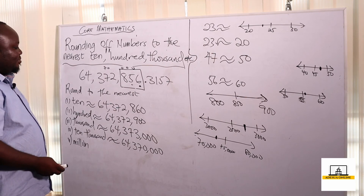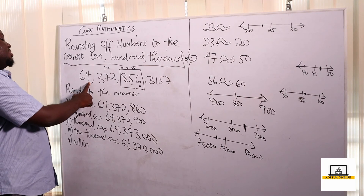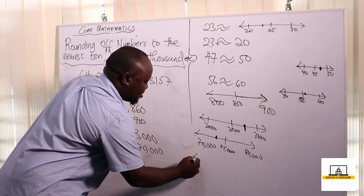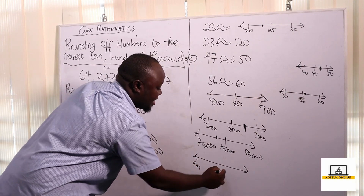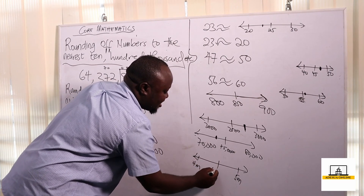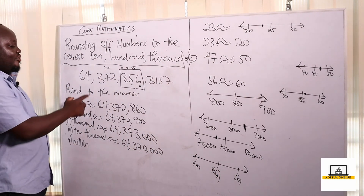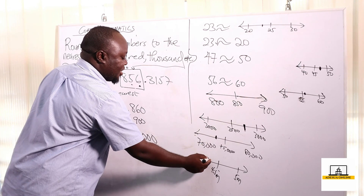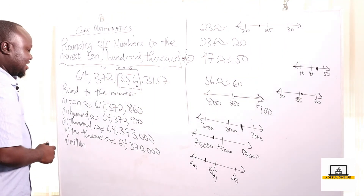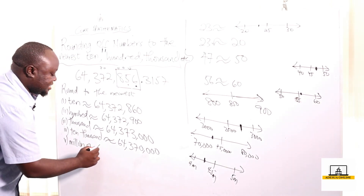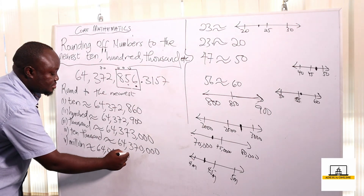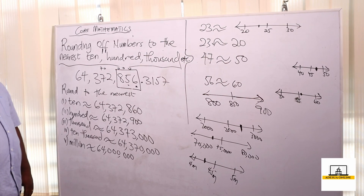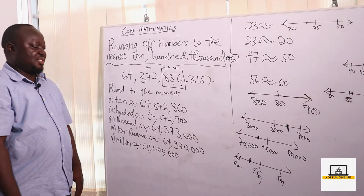Now let's talk about the million. We are looking at sixty-four million three hundred and seventy-two thousand eight hundred and fifty-six. When rounding to the nearest million, because we have sixty-four million, it should be between sixty-four million and sixty-five million. The middle is sixty-four point five million. We have sixty-four point three million, which is below the midpoint and closer to sixty-four million. So to the nearest million, this becomes sixty-four million. This is how we round numbers to the nearest ten, hundred, thousand, ten thousand, and million.